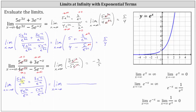Now we simplify. In the numerator, 5e to the power of 3x divided by e to the power of negative x is 5e to the power of 4x — we subtract the exponents: 3x minus negative x simplifies to 3x plus x, or 4x. Then e to the negative x divided by itself simplifies to 1, leaving us with plus 3. In the denominator, 4e to the 3x divided by e to the negative x is 4e to the power of 4x, and minus 5e to the negative x divided by e to the negative x is just minus 5. As x approaches negative infinity, 5e to the power of 4x approaches 0, and 3 is not affected. In the denominator, 4e to the 4x also approaches 0, and 5 is not affected. The numerator approaches 3 and the denominator approaches negative 5, giving us a limit of negative 3 fifths.